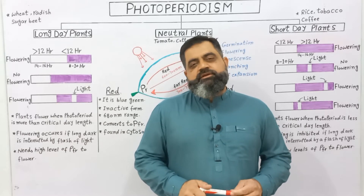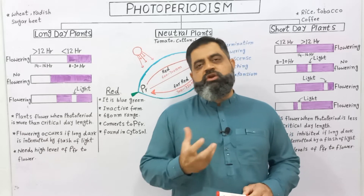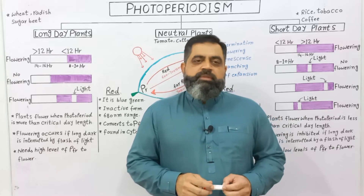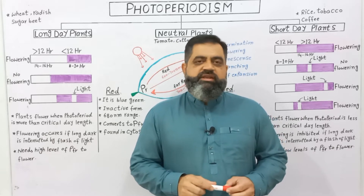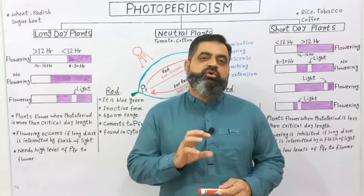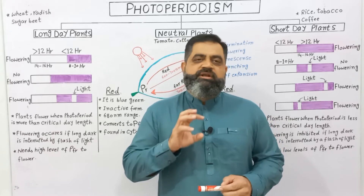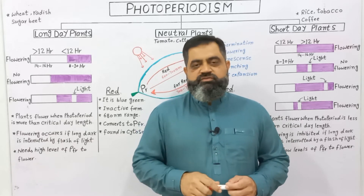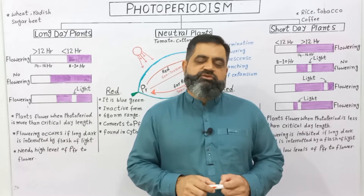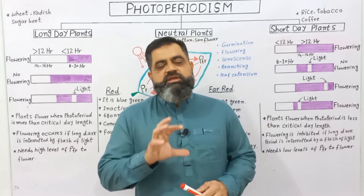Hello to all students, this is Professor Masood Fuzal, and in this video lecture we are going to discuss photoperiodism. As you know, plants do not contain any central nervous system like animals; their coordination is totally controlled by different hormones. The day length and the dark period of the day is controlled by specialized photopigments present in the cells of the plants, which are known as phytochromes.